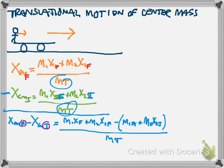Final minus initial is delta x. So we have delta x center of mass equals, here's m1 x final and m1 x initial, so that's m1 delta x1. And here's x2 final and x2 initial, so that's plus m2 delta x2